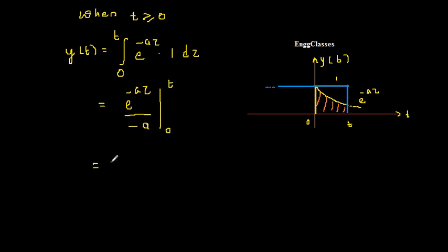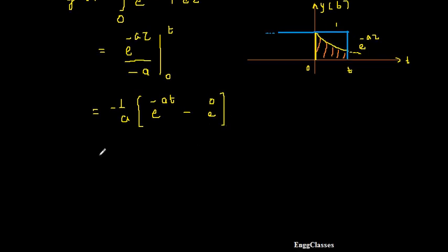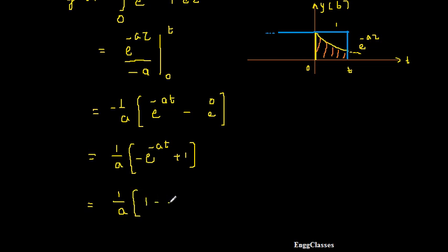Taking −1/a out and evaluating the limits: at the upper limit τ = t we get e^(-at), and at the lower limit τ = 0 we get e^0 = 1. So y(t) = −(1/a)[e^(-at) − 1]. Taking the minus sign inside gives y(t) = (1/a)[1 − e^(-at)].